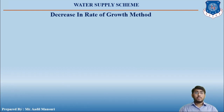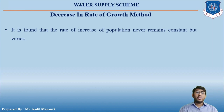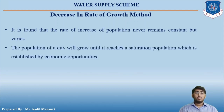This method is also known as the Logistic Curve method or S-Curve method. It is found that the rate of increase of population never remains constant but keeps on varying. The population of a city will grow until it reaches a saturation population, which is usually established by the economic opportunities.